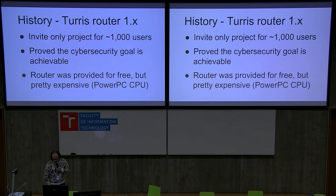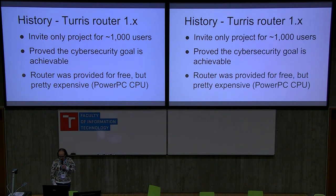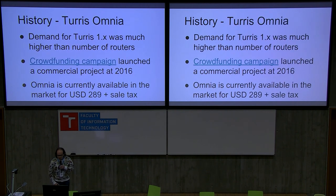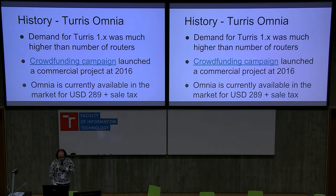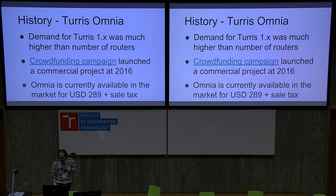Turris Router 1 was an invite-only project for 1,000 users — a pilot proof of concept that proved the cybersecurity goal is achievable. The router was provided free with a two-year lease contract. But the manufacturing cost was expensive — it used a PowerPC CPU. Because of very high demand, they decided to produce Turris Omnia. People were approaching them saying they wanted to pay for it, but they couldn't provide it in higher quantities, so they launched a crowdfunding campaign which was very successful — they got something like one and a quarter million US dollars on Indiegogo, while the initial goal was just $100,000. Omnia is currently available commercially for just under $300 without tax.